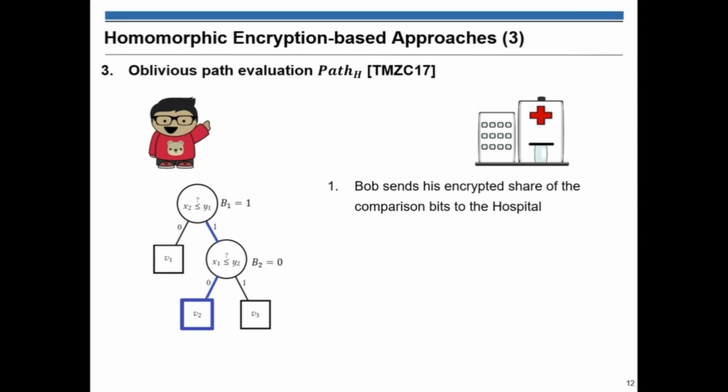Let's go to the third phase. We want to do an oblivious path evaluation. Bob sends his share from the previous phase, and send it to hospital. Hospital does a lot of magic here, basically, and then assigns an edge cost to each edge. And the way this phase works is that the only classification node that corresponds to the input of the Bob would have a cost of zero.